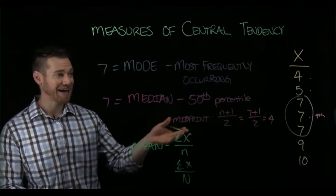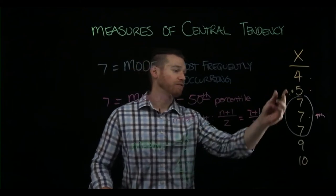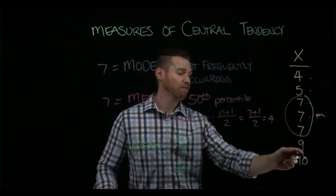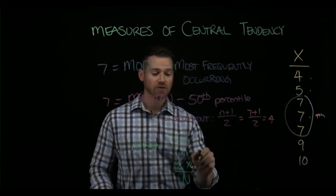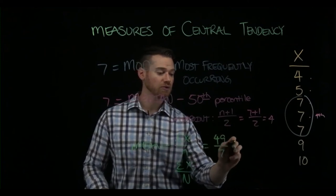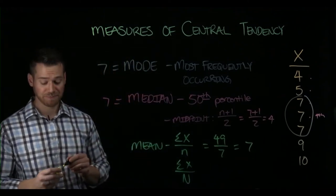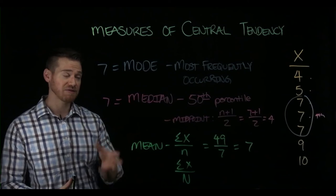So what we would do is add up all the scores we have and divide by the number there are. If we do that, we have 21 plus 9 is 30, plus 10 is 40, 49, and we have seven scores. So in this case, 49 is the sum of X, seven is the number of scores, so then we get that our mean is seven. So we have that the mean is seven, the median is seven, the mode is seven.